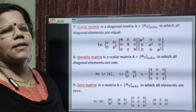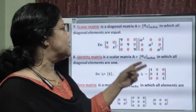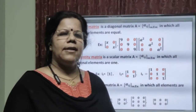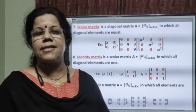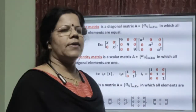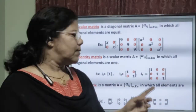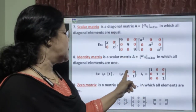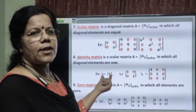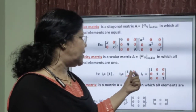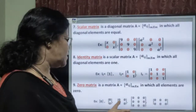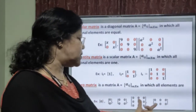Then comes the scalar matrix. A scalar matrix is a diagonal matrix where all the diagonal elements are the same scalar value — for example, x, x, x or 9, 9, 9. Next comes the identity matrix. An identity matrix is a square matrix, and it is a scalar matrix, but the only difference is that all the diagonal elements are 1. We denote the identity matrix of order 1 as I1, order 2 as I2, and order 3 as I3. Finally, the zero matrix — all elements are 0, whatever be the order.